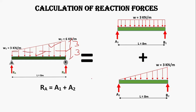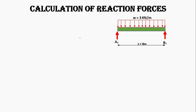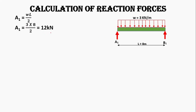We will find separately both reactions A1, A2, B1, B2, and then add them to get RA and RB. For the UDL reactions, I will use the formula: A1 = WL/2 = 12 kN, and B1 = WL/2 = 12 kN as well. If you want a detailed explanation for a simply supported beam with UDL, the link is in the description.